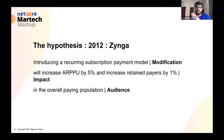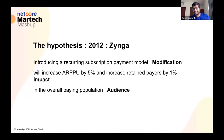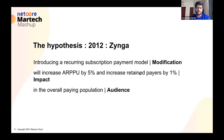So MIA. What did we do? 2012, Zynga. Our hypothesis looked something like this: introducing a recurring subscription payment model — which is the modification — will increase ARPPU by 5% and increase retained payers by 1% — which is the impact — in the overall paying population — which is the audience. Now the question that all of us will have naturally is: how did you arrive at this 5% and 1% without actually doing a test? This is the most important, crucial part, and it's always important not to resort to a shortcut.